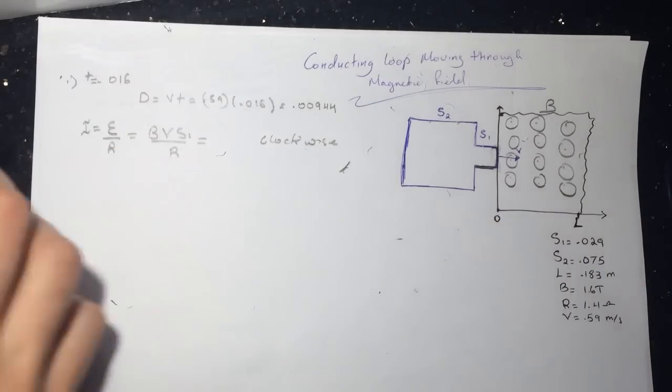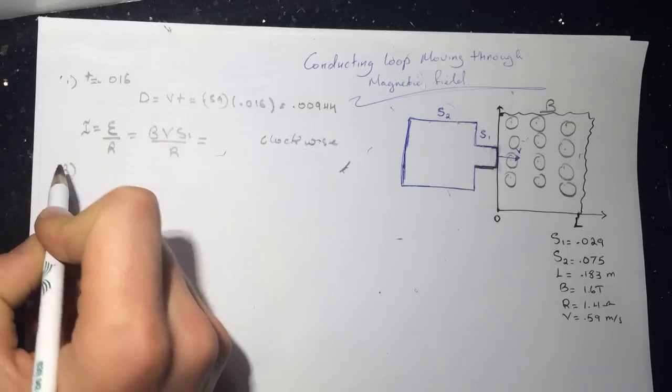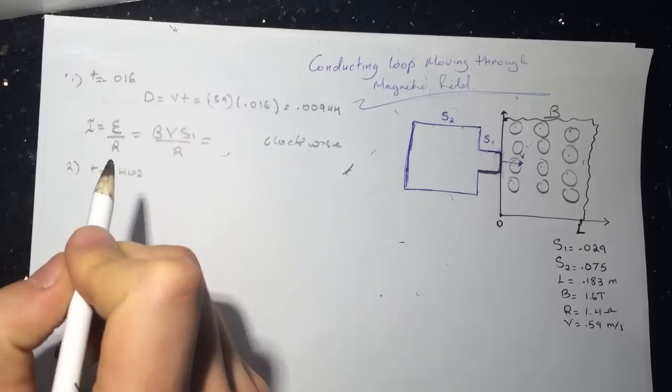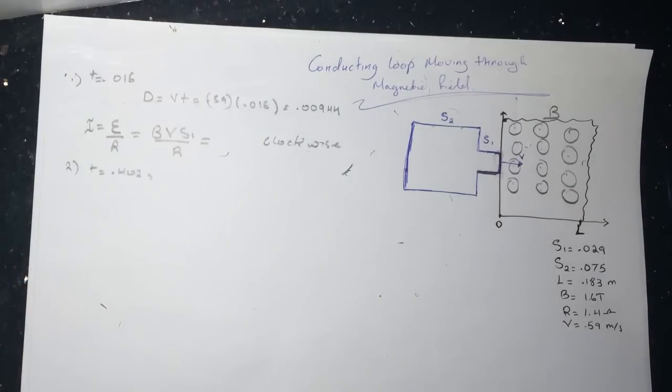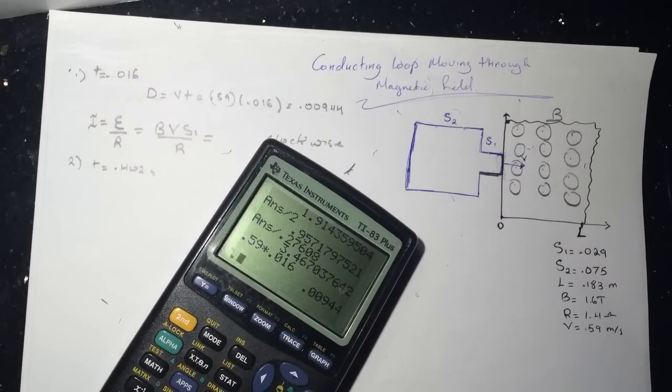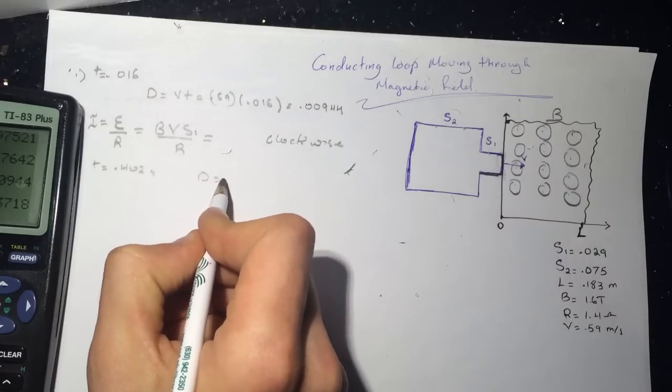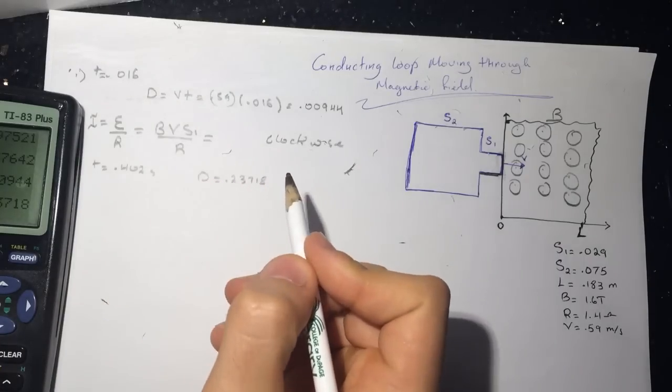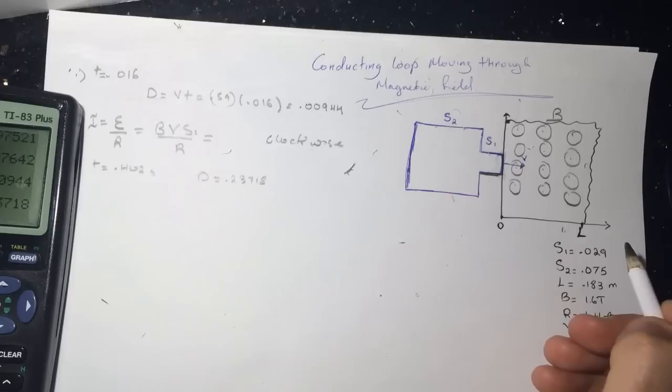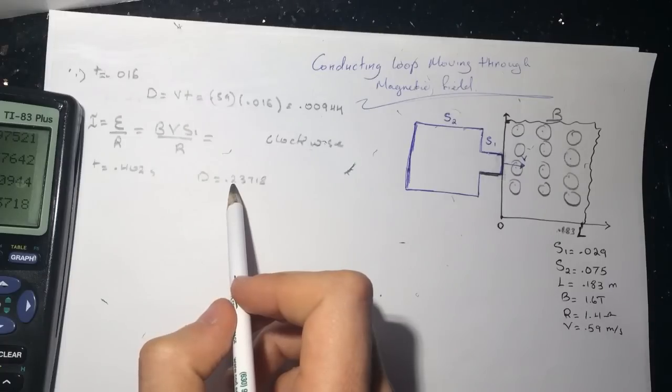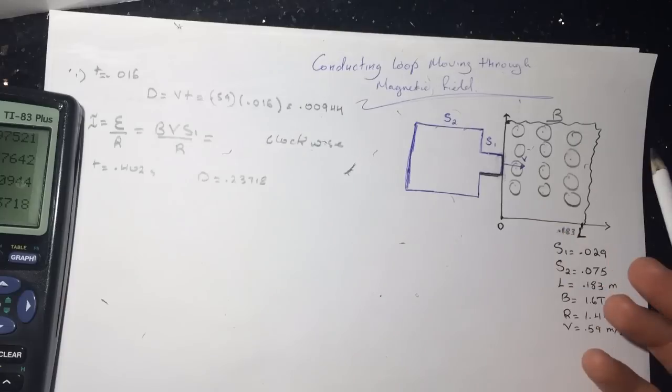Question number two is asking, at time equal 0.402 second, where is the induced current in the loop? Let's do the same. So let's plug in 0.402 times the velocity of it, 0.59. And we'll get 0.23718. And the L here was 0.183.